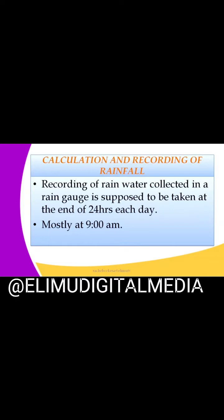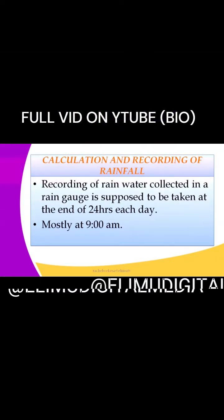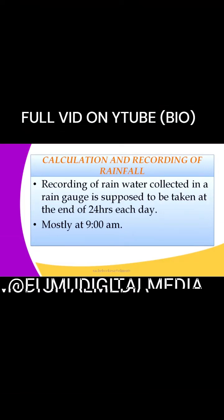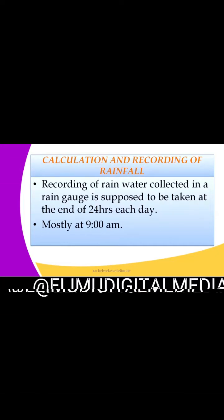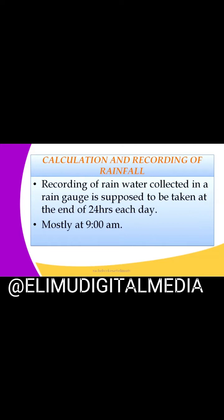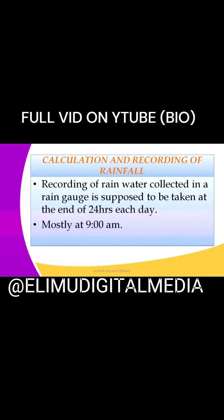We normally record rainfall and it is collected in a rain gauge, which is supposed to be taken at the end of 24 hours each day. We record rainfall at the end of 24 hours so that we can get the maximum amount of water that entered into the rain gauge. Mostly this is done at 9am, which is early in the morning, just after sunrise.